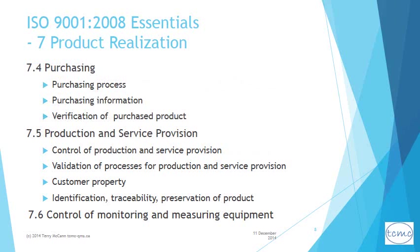The purchasing process required by 7.4 of the standard ensures suppliers are evaluated and selected based on their ability to provide products and services that meet requirements. This requires the gathering and recording of very specific purchasing information and verification and inspection of purchased product. This verification or inspection may occur upon delivery at the receiving station or at the supplier's premises.